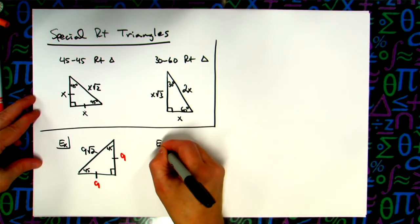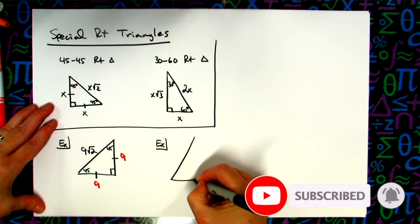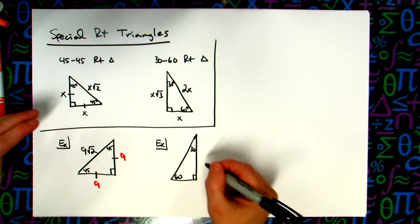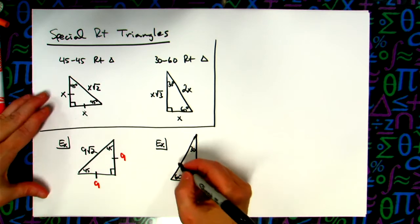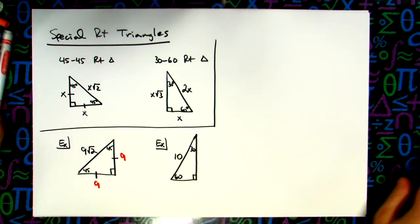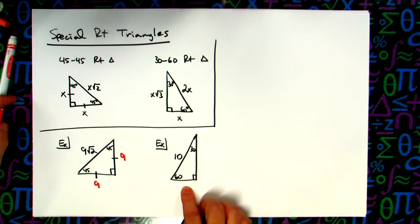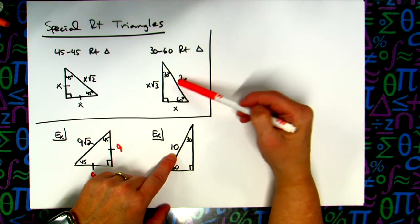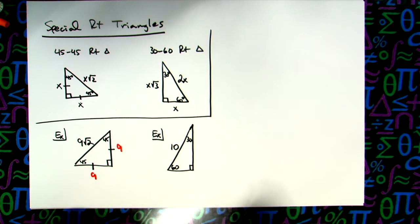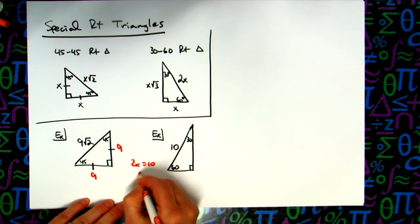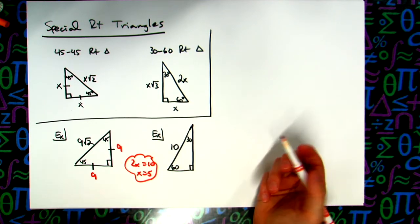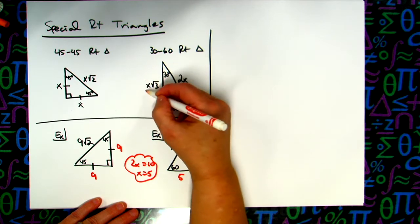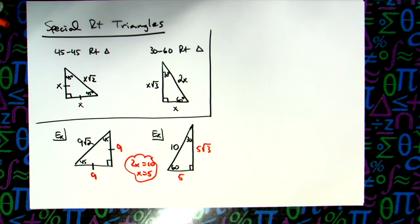Now a 30-60 example. Say the hypotenuse is 10. The hypotenuse formula is 2x, so 2x = 10, giving x = 5. The side across from the 30° is 5, and the side across from the 60° is 5√3. This one is a bit more challenging because I had to solve for x first, compared to when they give you a leg directly.